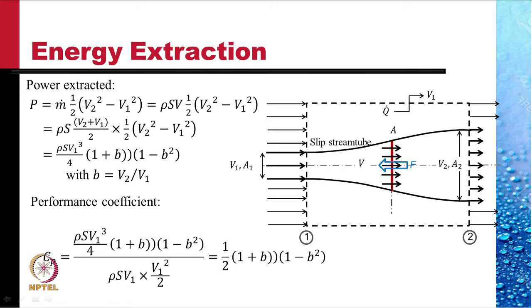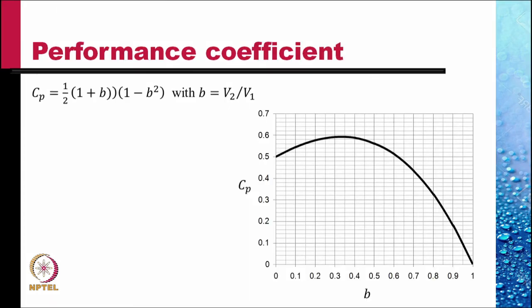It is an interesting result. As B changes, one parameter goes up, the other goes down and so there is a maximum value of this Cp.